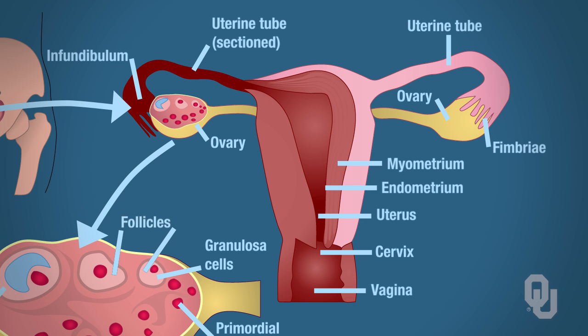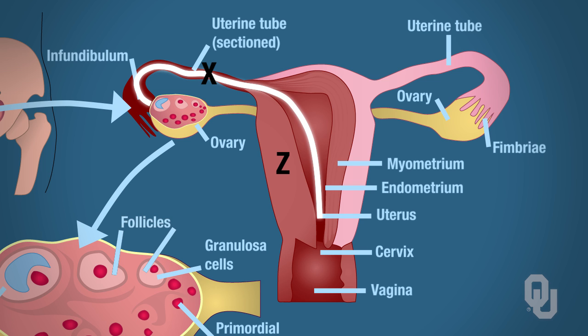Once that mature ovum is ready, it will leave the ovary and travel into the uterine tube. If fertilization is going to occur, it occurs in the uterine tube — X marks the spot, that's where fertilization takes place. Then either the zygote, if it's a fertilized egg, or the mature ovum, will travel to the uterus. If it is a fertilized egg zygote, that's going to be implanted into the wall of the uterus. If the mature ovum is not fertilized, it's going to continue to pass through the uterus, through the vagina, and out of the body.